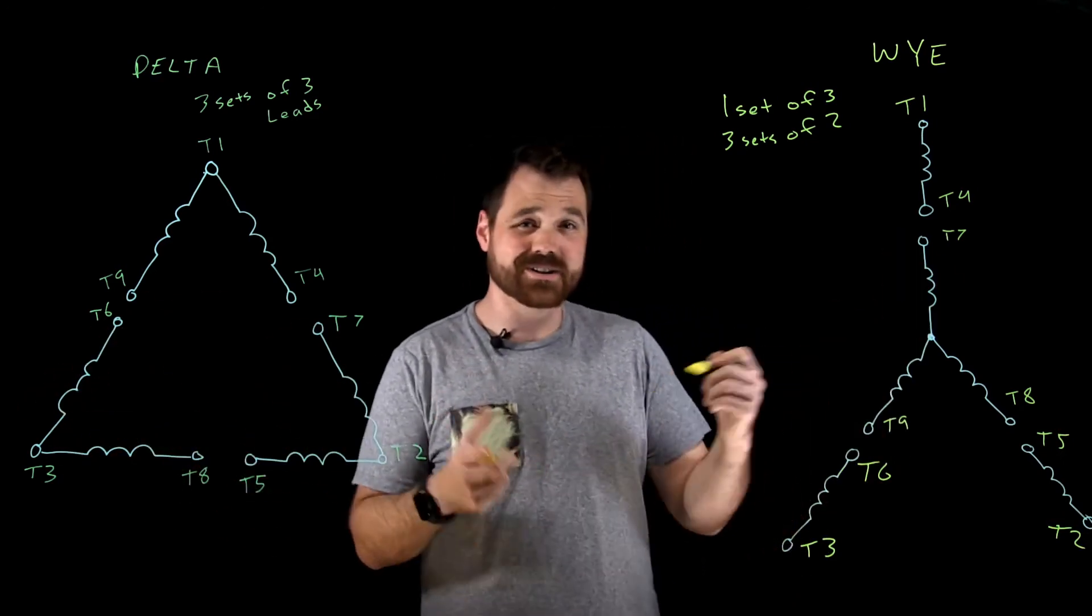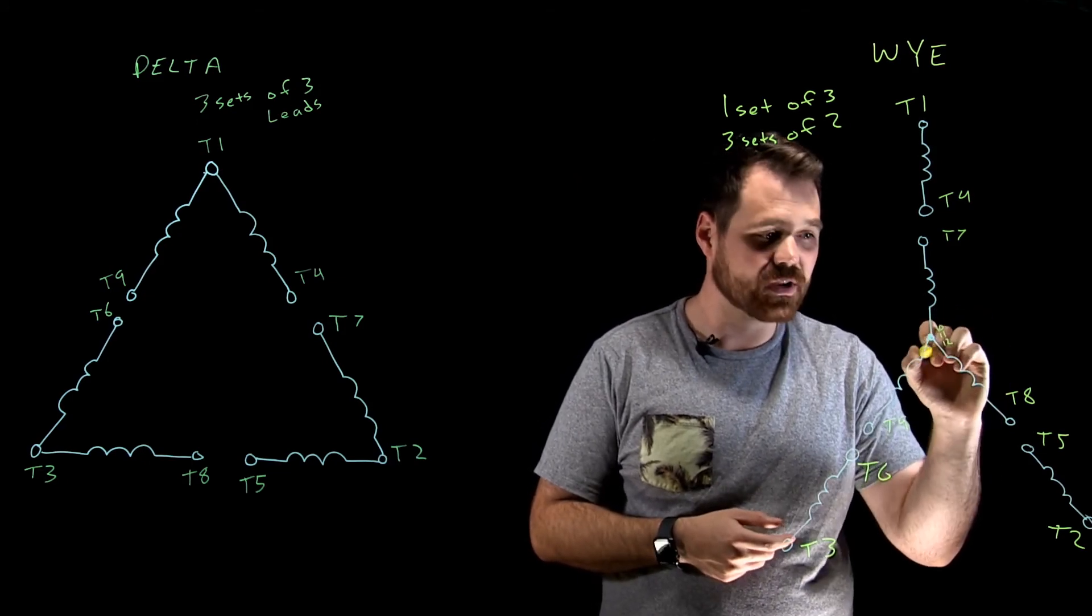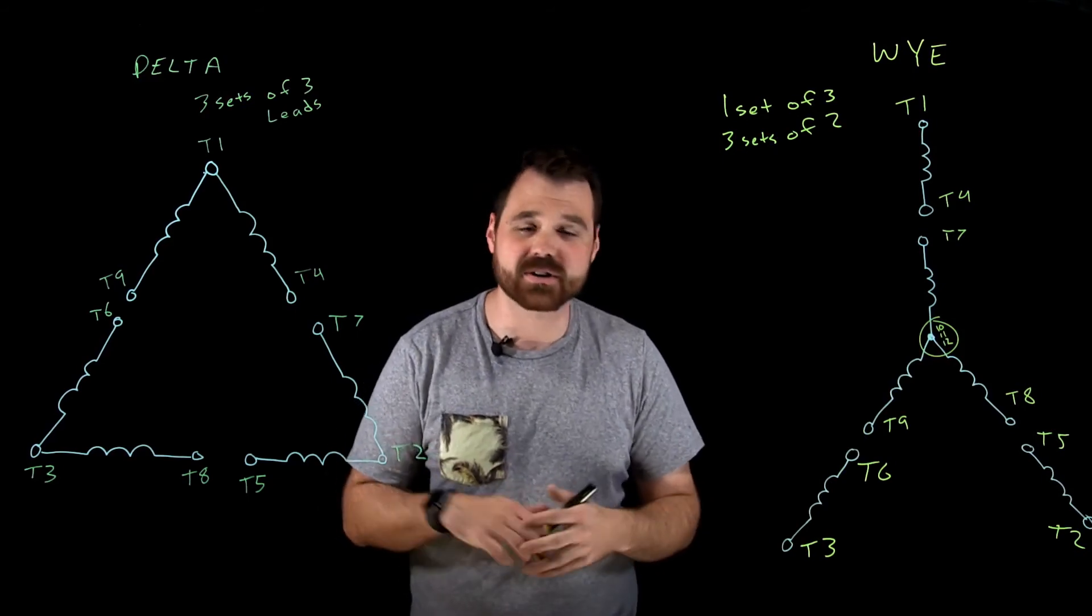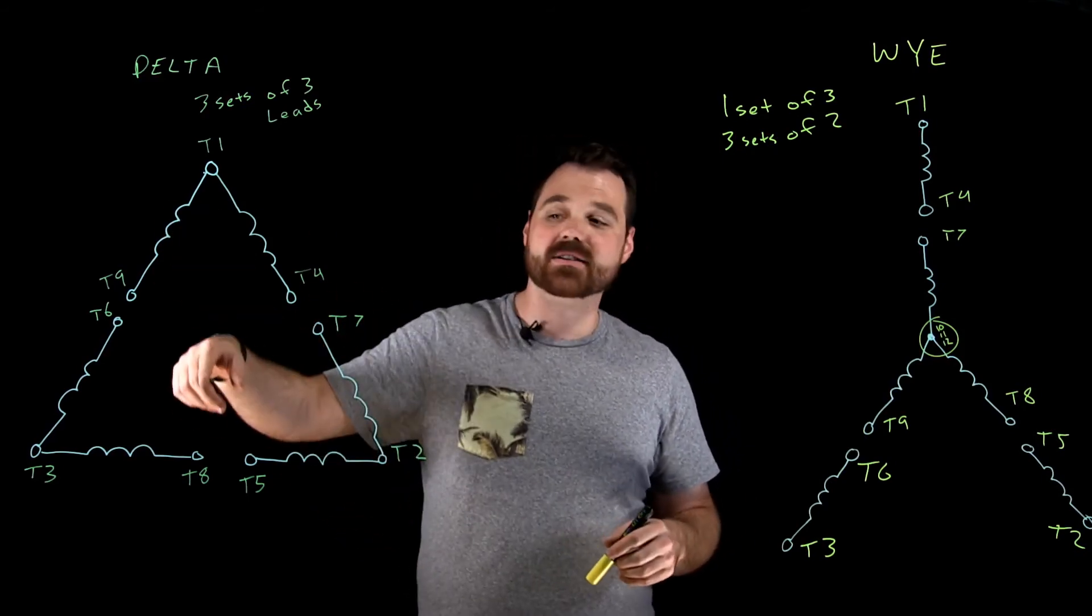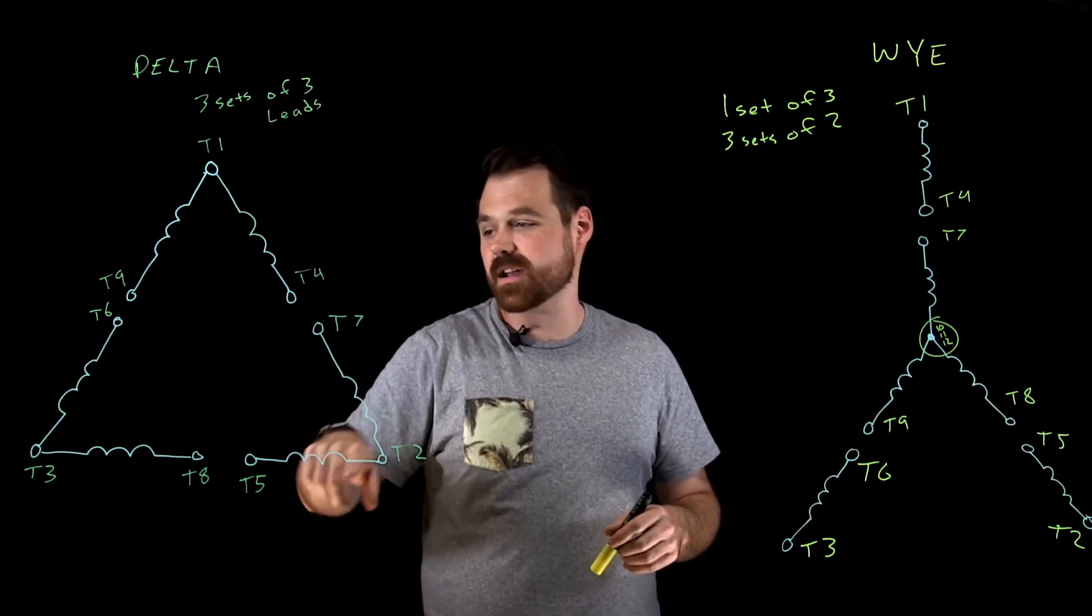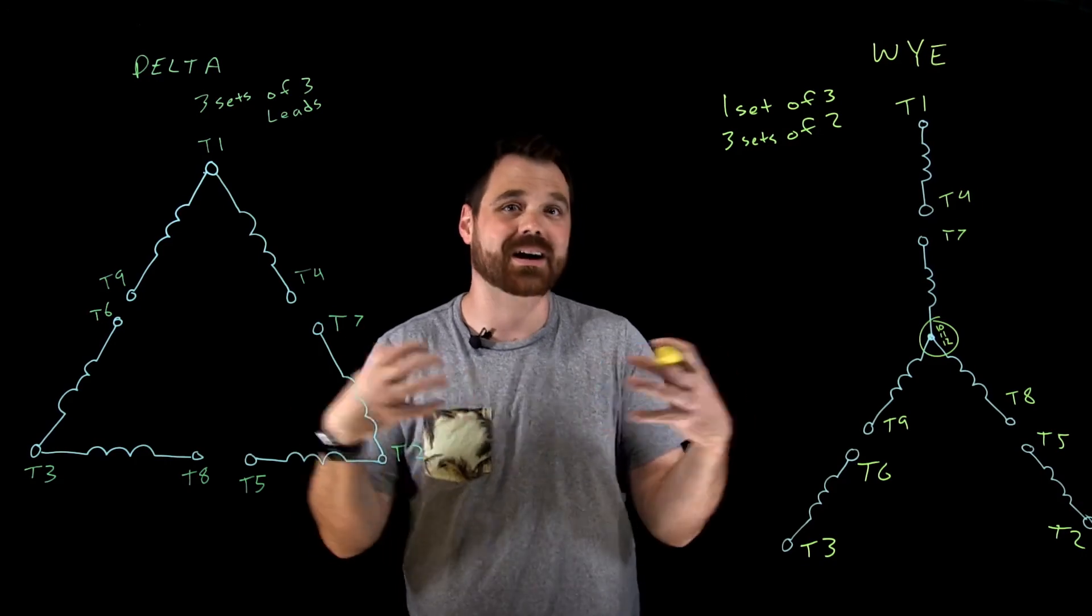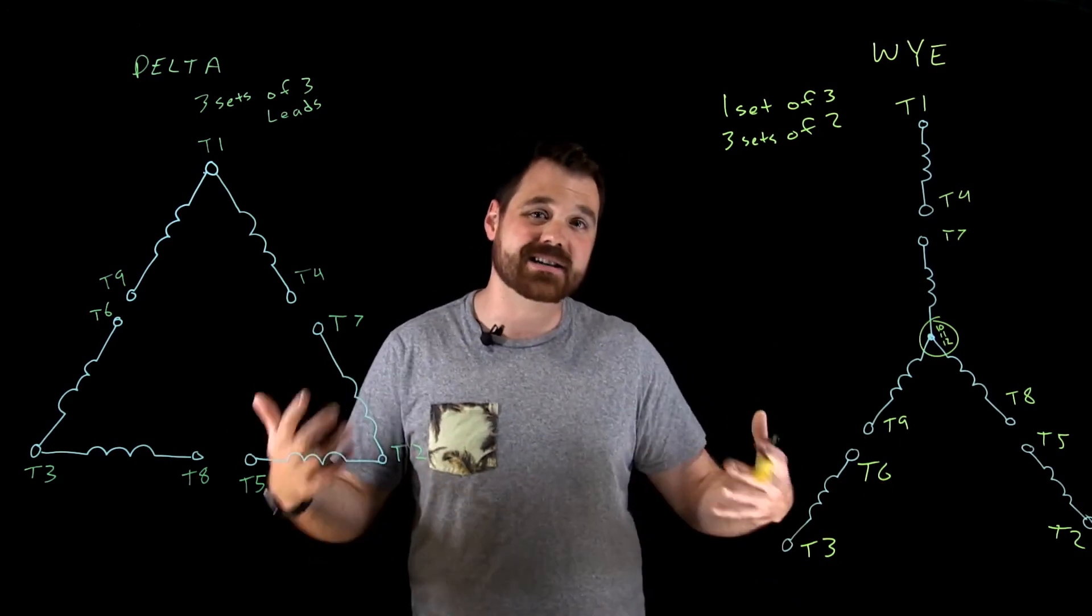What we don't see here is inside the motor is actually T10, eleven and T12. And they're all joined at the factory, we don't have access to those terminals. Same with we don't have access to them here. We don't have access to what would be ten, eleven and twelve. They're actually pre-connected at the factory, but they're actually the same windings just configured in a different way.